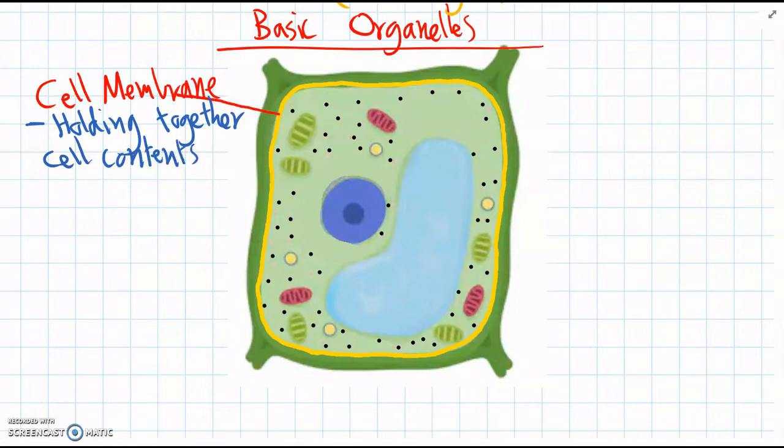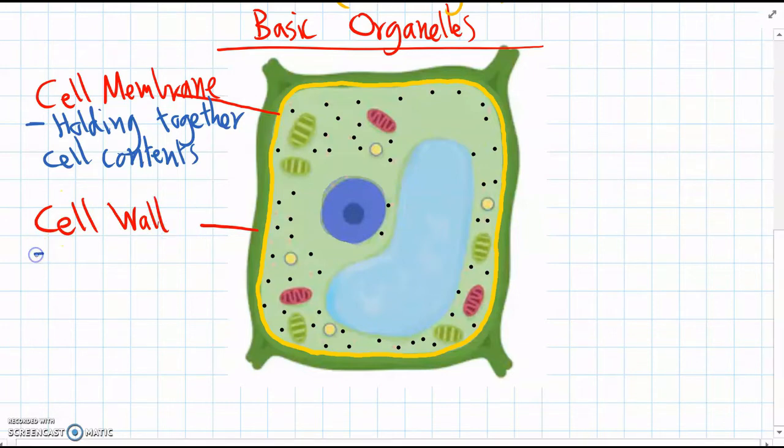Further out from the cell membrane is this thicker layer and this is a cell wall. And just like any wall, the cell wall is strong and rigid and it gives the cell a shape. It gives the cells strength or a solid shape.